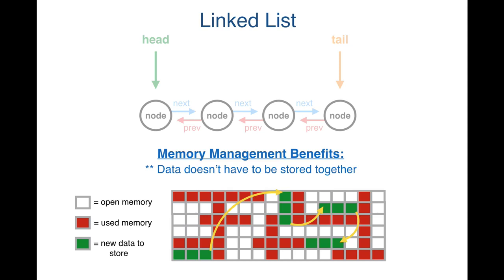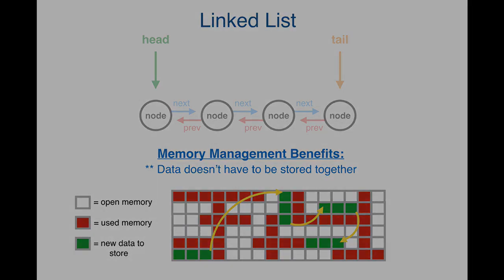So linked lists are very effective at using space or memory efficiently too. That is it for our work with linked lists. I hope that you have learned a lot and have a better understanding of what a linked list is, what it is useful for, and how to implement it in code. In the next section, we will be exploring and implementing another very powerful data structure called the binary search tree. I will see you in the next video.